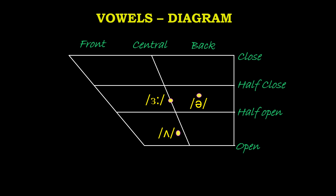Now, central vowels — very simple. The front part of the tongue is used for front vowels, the back part for back vowels, and the center part of the tongue is used for central vowels. If you look at the hard palate and soft palate region, the center part of the tongue rises toward the center palate region. Central vowels are three in total: one long and two short vowels.